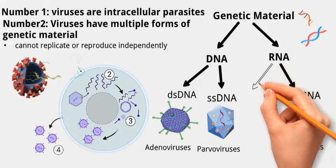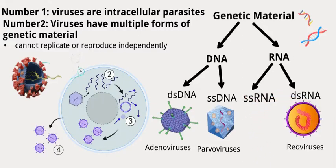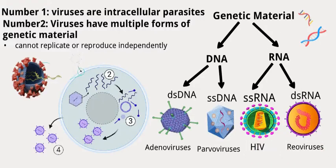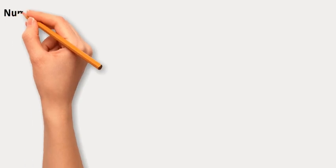Single-stranded DNA, or ssDNA, like parvoviruses, has a single-stranded DNA genome where genetic information is stored in a single DNA strand. Single-stranded RNA, or ssRNA — many viruses including influenza, HIV, and rhinovirus — carry their genetic information in a single RNA strand. RNA viruses are generally more mutable due to error-prone replication enzymes and a lack of proofreading mechanisms. Viruses can have only a few genes to tens or hundreds.